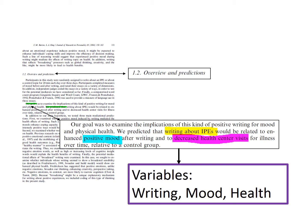Burton and King make it a little trickier by talking about different levels of the variable and using slightly different wording in the goal sentence compared to in the prediction. If we think about the wording and what they appear to be interested in, though, we get the idea that they are interested in three variables: writing, mood, and health.